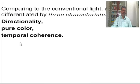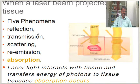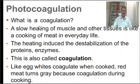The characteristics of lasers include directionality, pure color, and temporal coherence. When a laser beam is projected onto a tissue — human body tissue or any living tissue — these laser characteristics result in reflection, transmission, scattering, re-emission, and absorption.